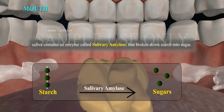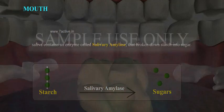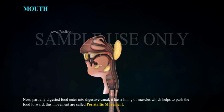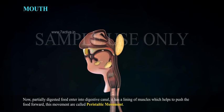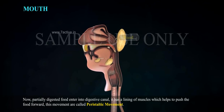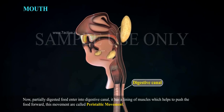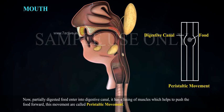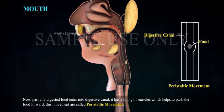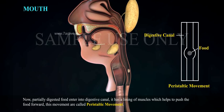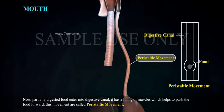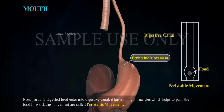Saliva contains an enzyme called salivary amylase that breaks down starch into sugar. The partially digested food then enters the digestive canal, which has a lining of muscles that helps push the food forward. This movement is called peristaltic movement.